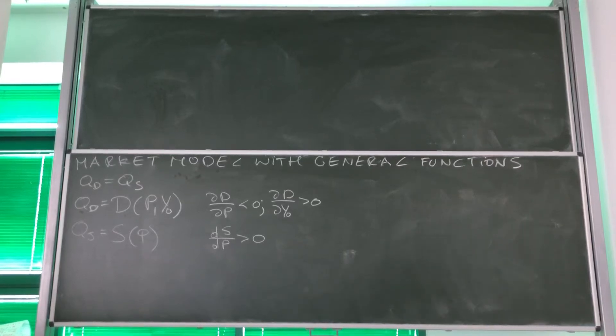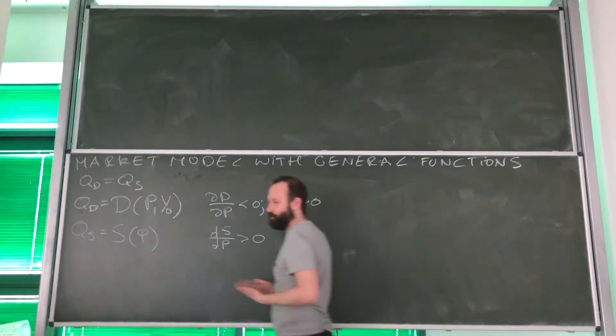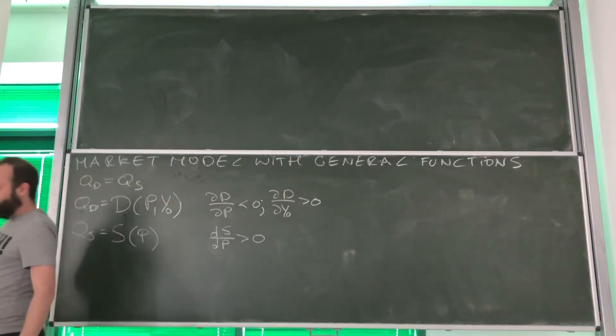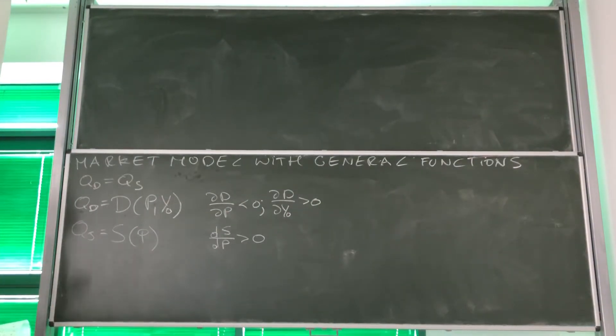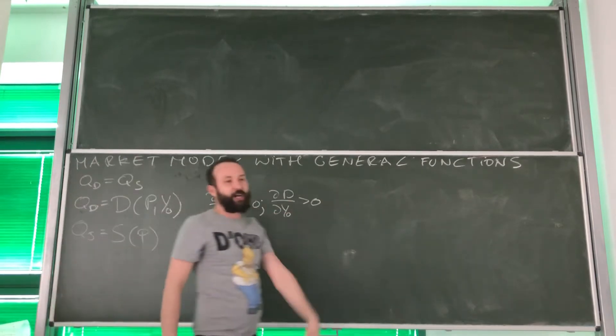Hi, in the previous video we've learned about implicit function rule. Now we will apply it to the first economic example, market model with general functions.